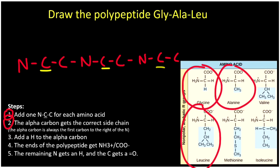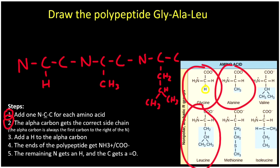For glycine, the side chain is super simple — just a hydrogen — so we add just a hydrogen on the first alpha carbon. The next alpha carbon gets alanine's side chain, which is a CH3 group. For the last alpha carbon we add leucine's side chain, which is the most complex: CH2 down to a CH, which then branches into two methyl groups, CH3 and CH3. Step three: add an H to each alpha carbon so every alpha carbon reaches four bonds.